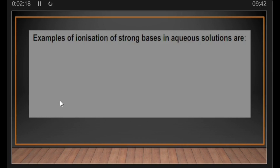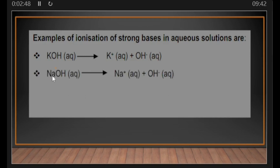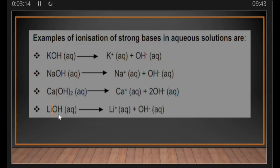Starting with the ionization of potassium hydroxide in aqueous solution: KOH in aqueous solution ionizes to give potassium ion (K⁺) and hydroxide ion (OH⁻). Sodium hydroxide in aqueous form splits to form sodium ion (Na⁺) and hydroxide ion (OH⁻). Calcium hydroxide in aqueous solution splits to form calcium ion (Ca²⁺) and hydroxide ions (OH⁻).